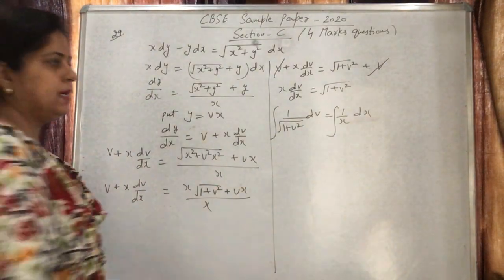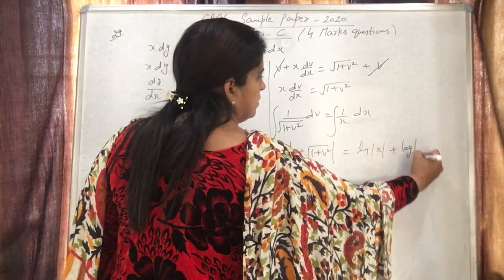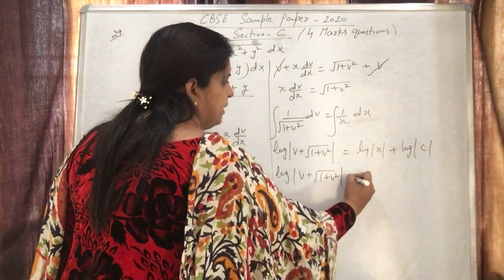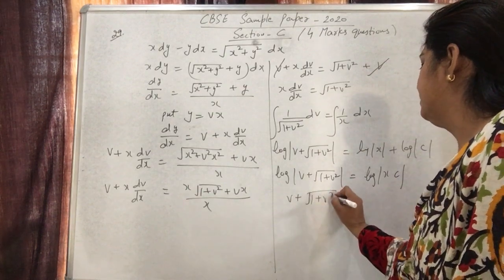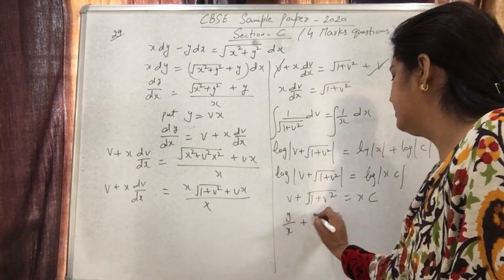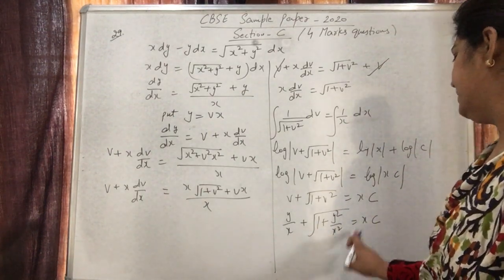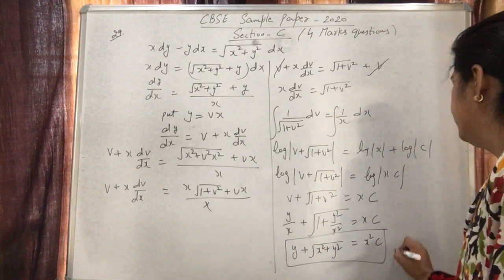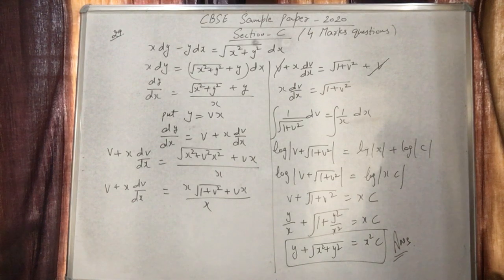Since all terms are in log form, we write the constant as log(c). Using log(m) + log(n) = log(mn), we combine to get log(v + √(1+v²)) = log(xc). Substituting back v = y/x, we get the general solution: y/x + √(1+(y/x)²) = xc. Always highlight the final answer clearly for good presentation.